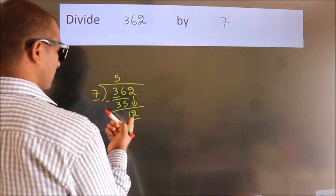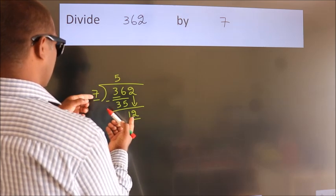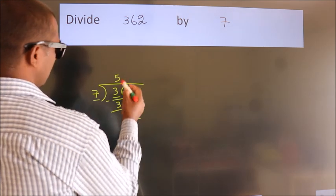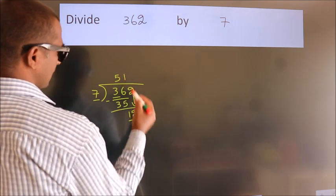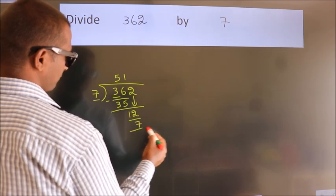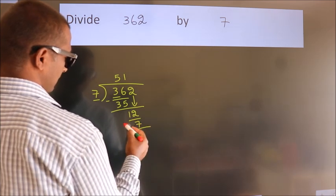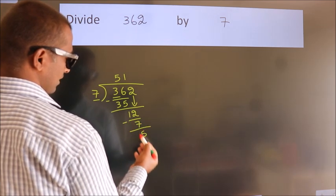A number close to 12 in the 7 table is 7 ones 7. Now we subtract and we get 5.